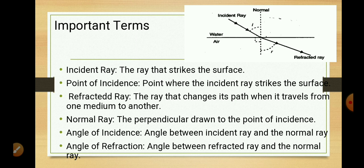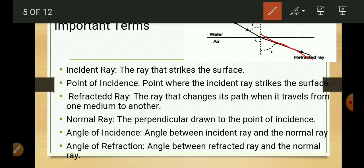Here are some important terms of refraction of light. Incident ray: the ray that strikes the surface. Point of incidence: the point where the incident ray strikes the surface. Refracted ray: the ray that changes its path when it travels from one medium to another. Normal: a perpendicular drawn to the surface at the point of incidence. Angle of incidence: the angle between the normal and the incident ray. Angle of refraction: the angle between the refracted ray and the normal.